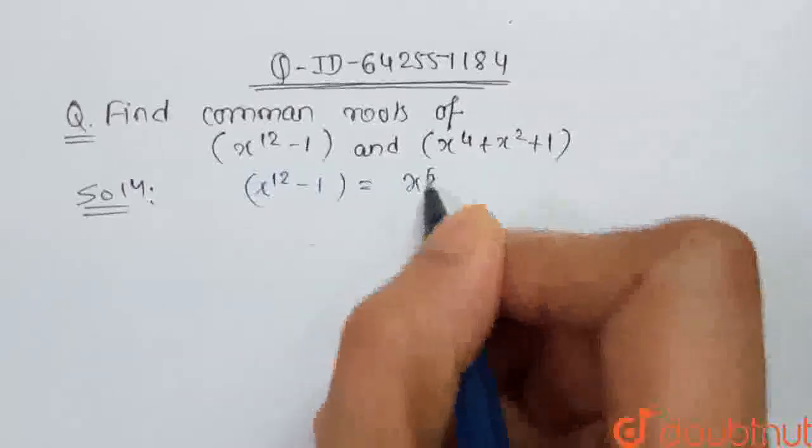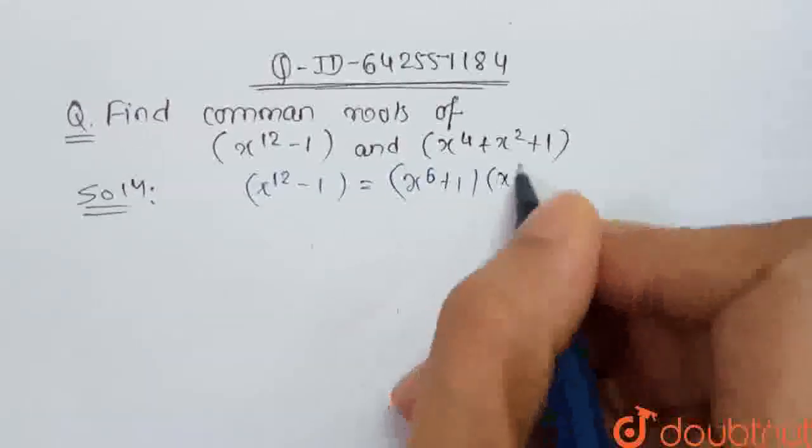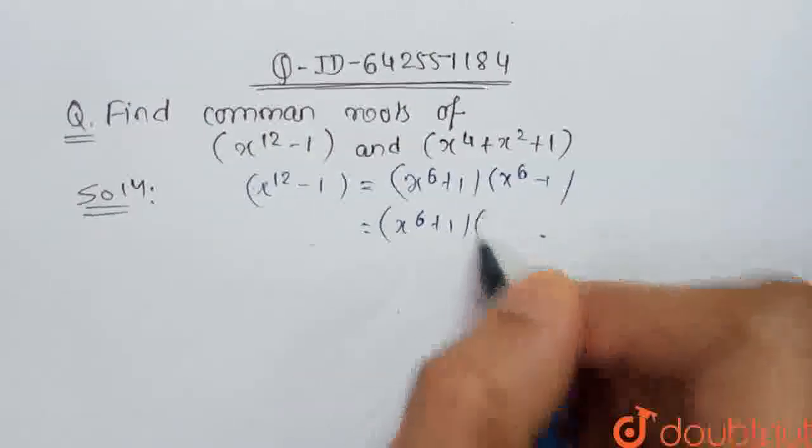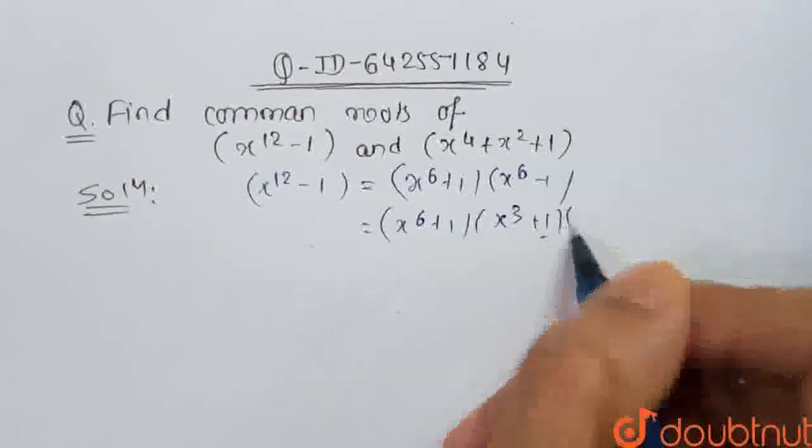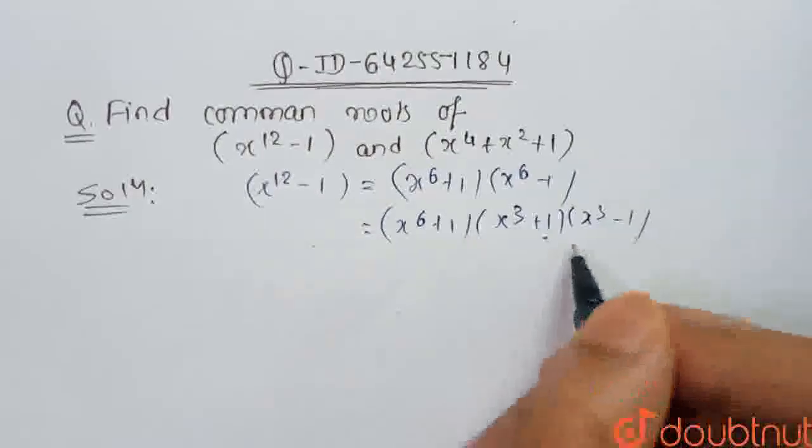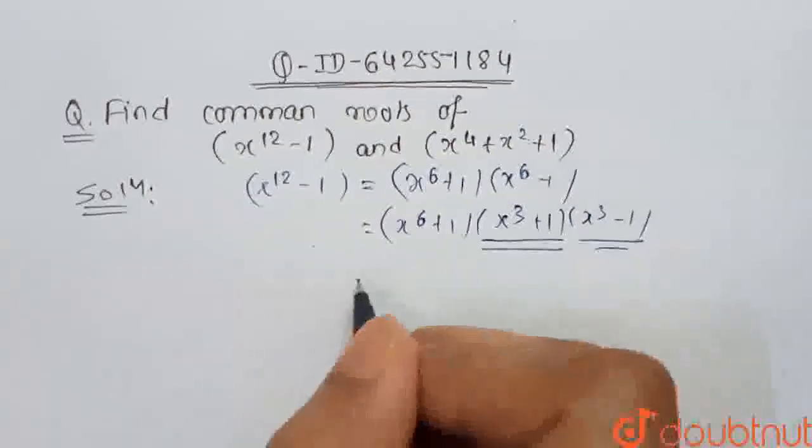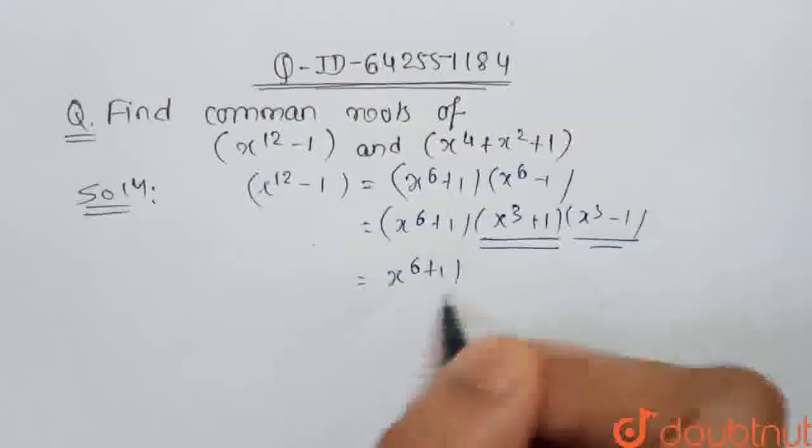So this will be factorized as x^12 + 1 equals (x^6 + 1)(x^6 - 1). x^6 can be further classified as (x^3 + 1)(x^3 - 1). We can further do factorization of these two terms. It will be x^6 + 1.